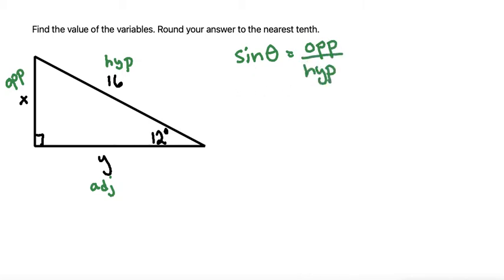Plugging in the numbers that we have would be sine of 12 degrees is equal to the opposite side, which we have as x, divided by the hypotenuse, which is 16.